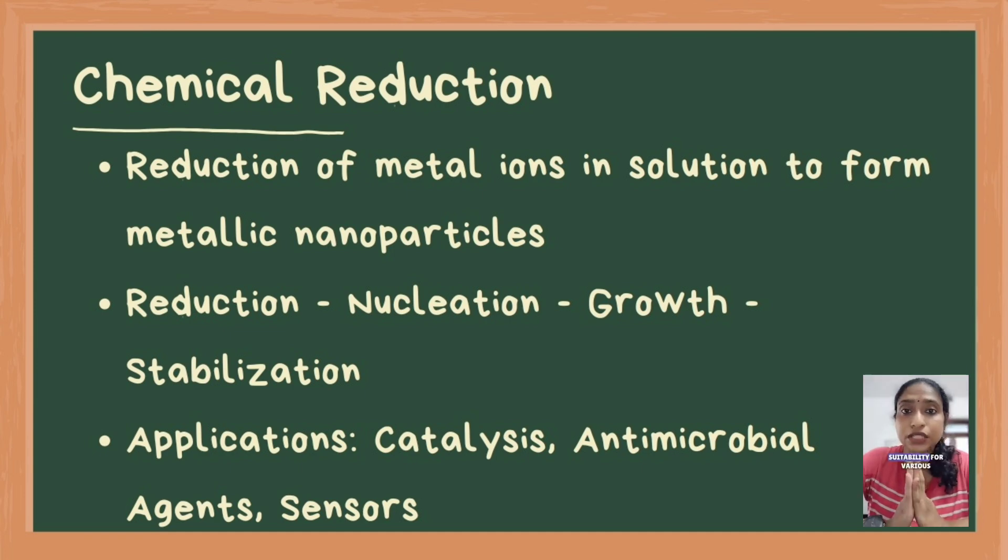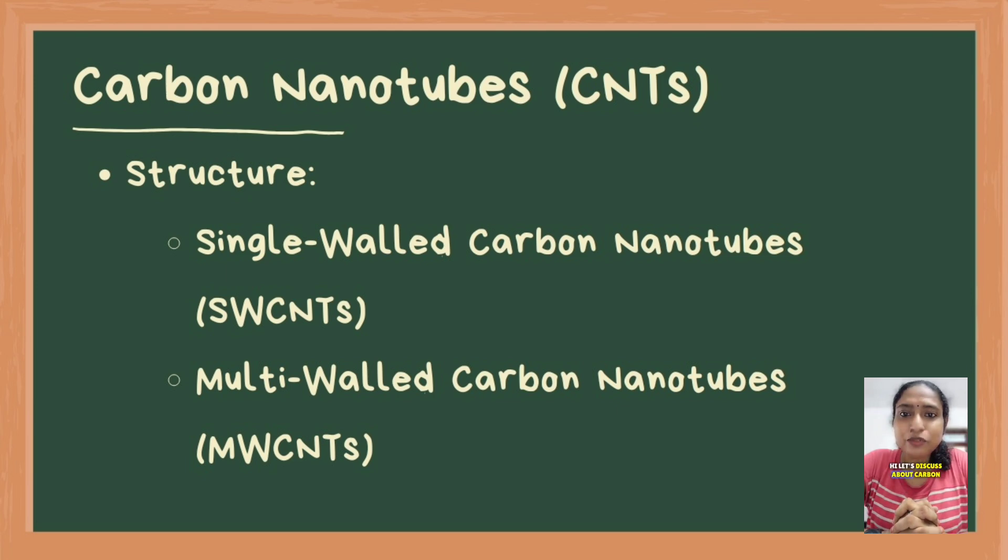Hi, let's discuss carbon nanotubes or CNTs. These are cylindrical carbon structures that can be either single-walled or multi-walled. SW-CNT and MW-CNT are the acronyms for single-walled and multi-walled CNTs respectively. Single-walled CNTs consist of a single graphene sheet rolled into a cylinder, while multi-walled CNTs comprise multiple concentric graphene cylinders.